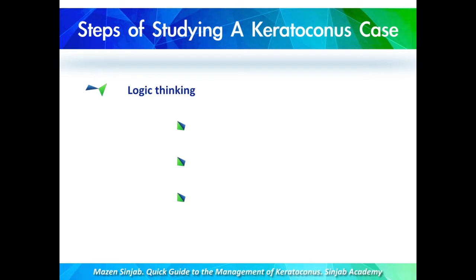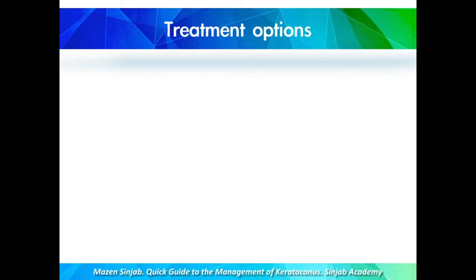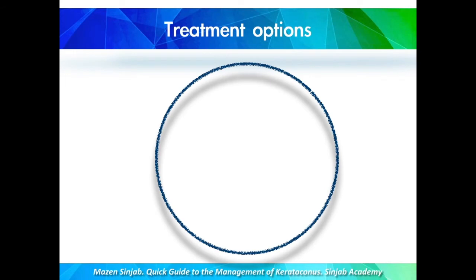Logic thinking consists of answering three questions: to do or not to do, what is next, and is it the least aggressive. Actually, the most important question among these is 'what is next?' But before we start the logic thinking step, let us review the available options for treatment of ectatic corneal diseases.